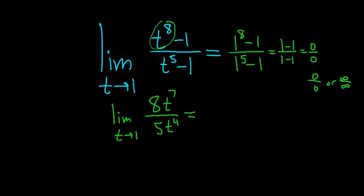Now you just plug in the number. So you plug in 1, you get 8 times 1 to the 7th over 5 times 1 to the 4th. So you just get 8 times 1 over 5 times 1.